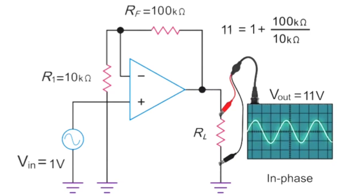Reducing the feedback resistor value RF to 47 kiloohms will yield a gain of 5.7 volts. Increasing the value to 200 kiloohms will yield a gain of 21 volts.